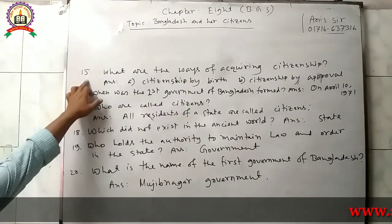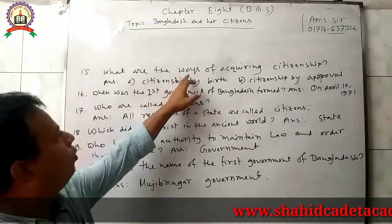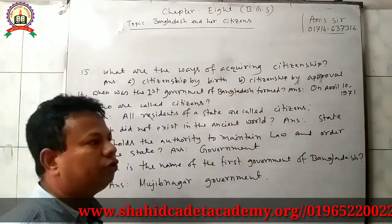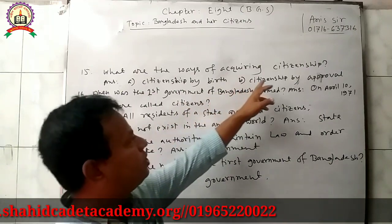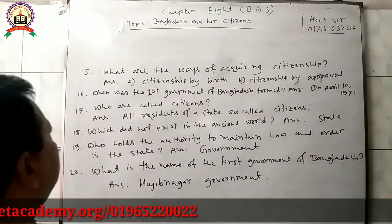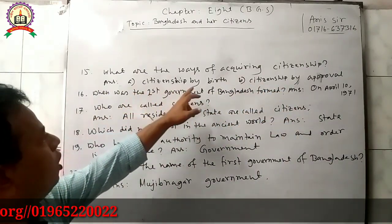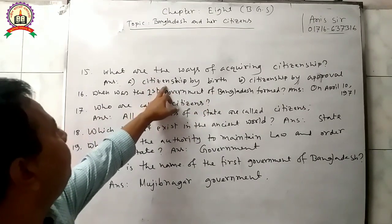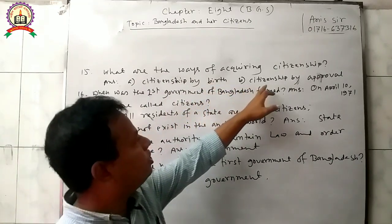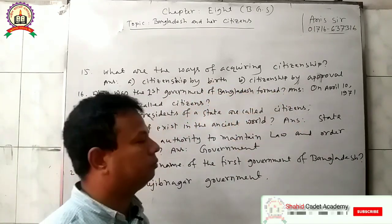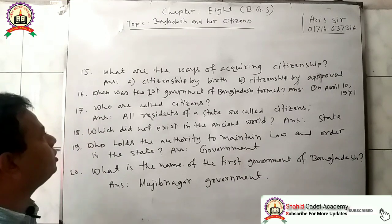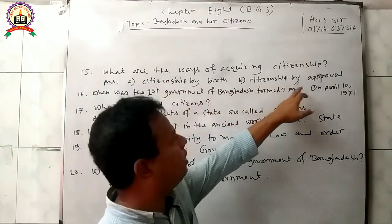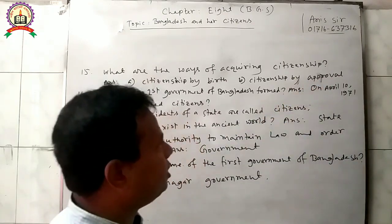Question 15: What are the ways of acquiring citizenship? Answer: The ways of acquiring citizenship are: 1. Citizenship by birth, and 2. Citizenship by approval.